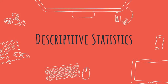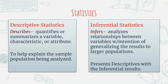Today we're going to talk about descriptive statistics. Statistics have two basic camps: descriptive statistics and inferential statistics. Descriptive statistics describe — they quantify or summarize a variable, characteristic, or attribute, and we use these to explain the sample population being analyzed. Inferential statistics infer — we hope to generalize our information to larger populations, typically analyzing relationships between two or more variables. Whenever we write inferential statistic results, we always want to include and present the descriptive statistic results.